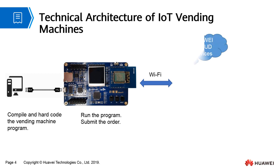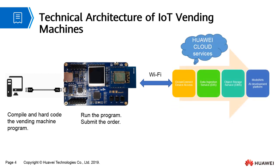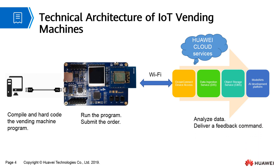Order data is transmitted to OceanConnect device access through Wi-Fi and forwarded to DIS, OBS, and ModelArts for analysis. Feedback commands will be delivered based on the analysis result. After receiving the feedback command, the developer board adjusts the product sequence displayed on the vending machine screen.